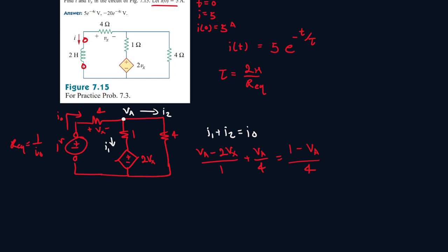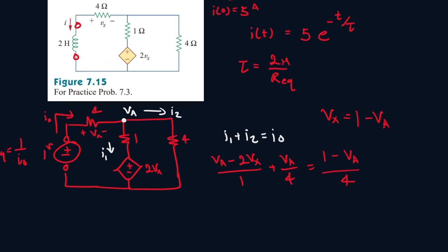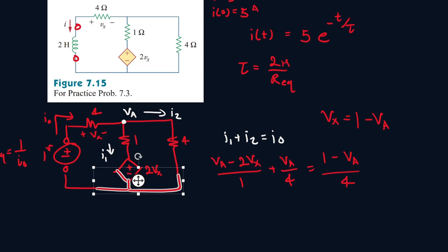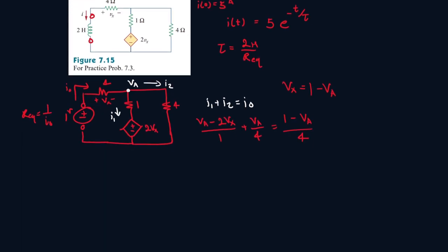Now we have to find something to represent as Vx. So Vx will be the difference of 1 minus VA. So we know Vx is equal to 4IO because IO enters the positive terminal here.